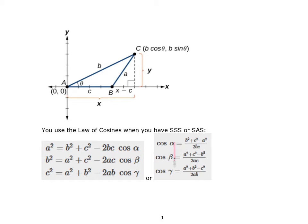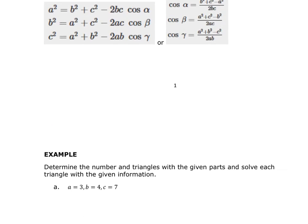If I'm solving for my angle, it is the same thing as B squared plus C squared minus A squared over 2BC. If I'm solving for one of the sides then I would use one of those forms. So it depends on what I'm looking for when I'm using the Law of Cosines.